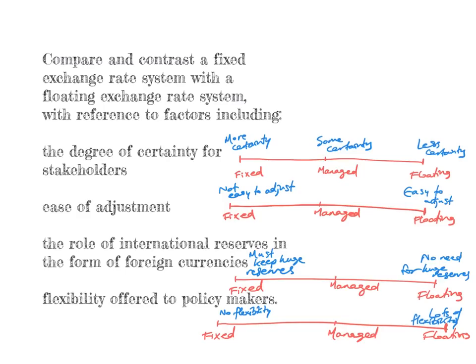Now I'm going to compare and contrast a fixed exchange rate system with a floating exchange rate system. The IB syllabus specifies four comparison factors. The first is the degree of certainty for stakeholders. A fixed exchange rate system offers the highest degree of certainty for investors, consumers, and producers because it's fixed — there's no room for speculation. A floating exchange rate system offers the least certainty with lots of room for speculation. A managed exchange rate system sits somewhere in the middle.